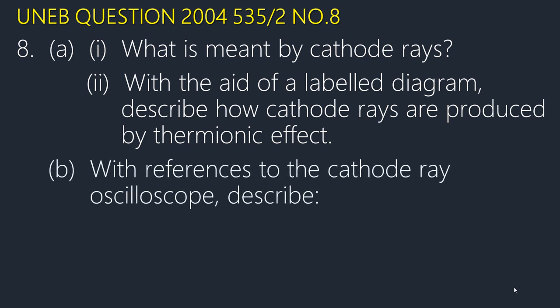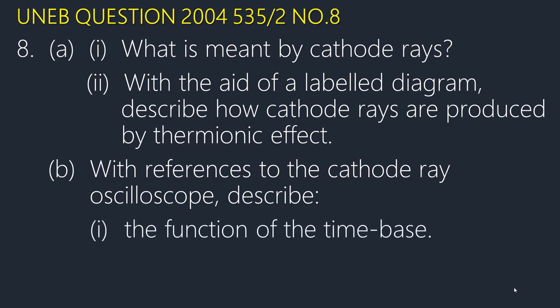Part B says: with reference to the cathode ray oscilloscope, describe the function of the time base. The time base is a special circuit connected to the X-plates. It applies an alternating voltage across the X-plates so that the electron beam can be deflected horizontally.